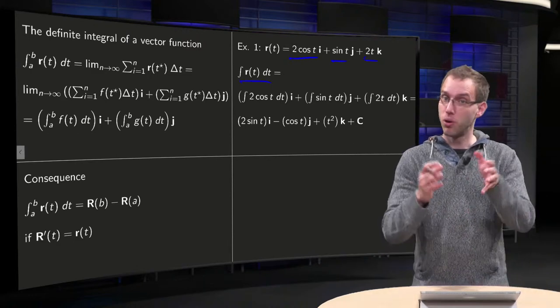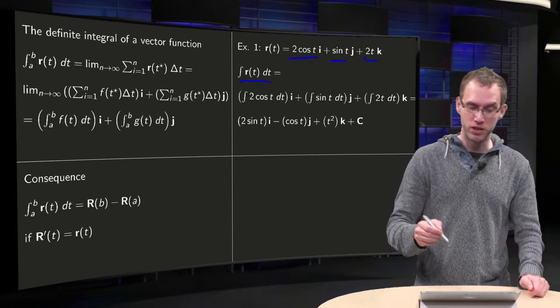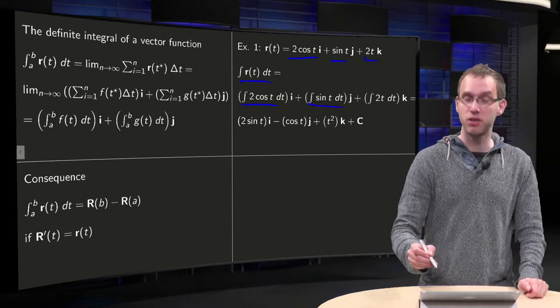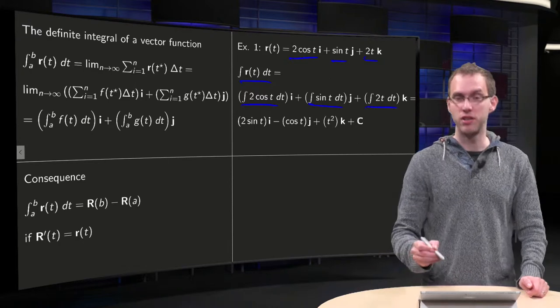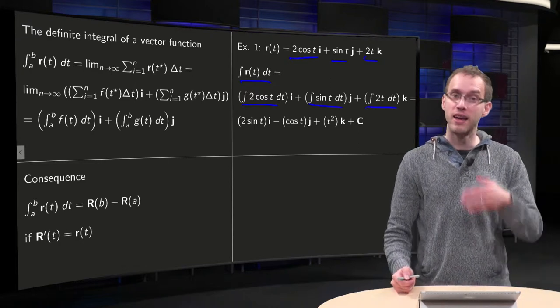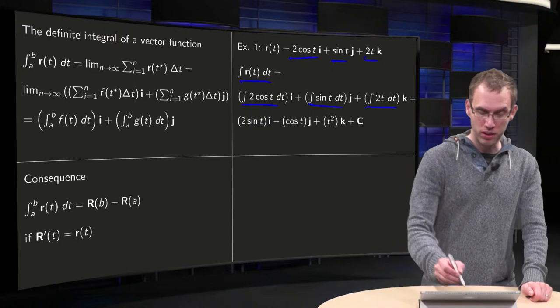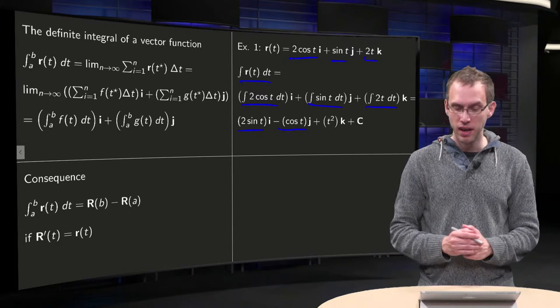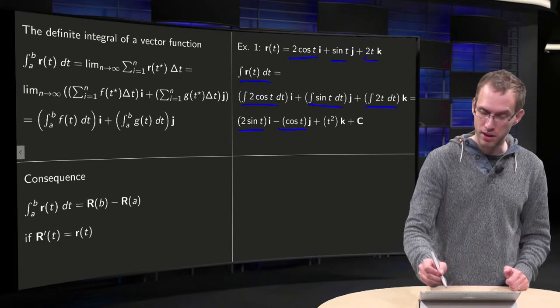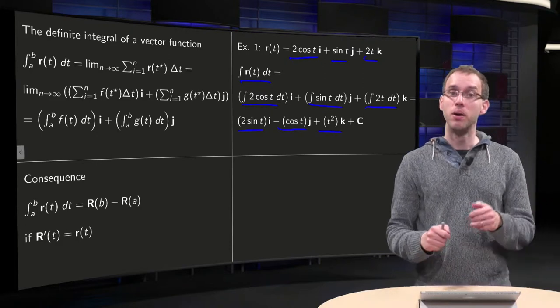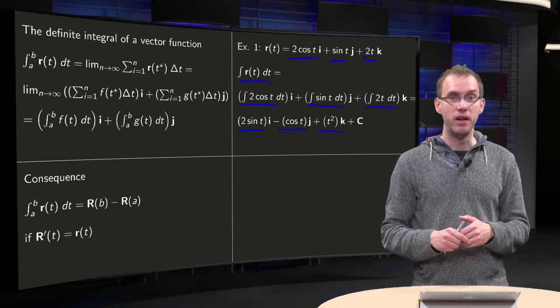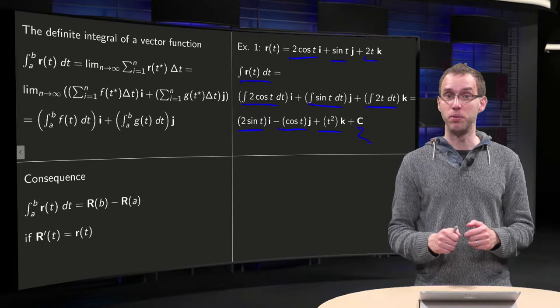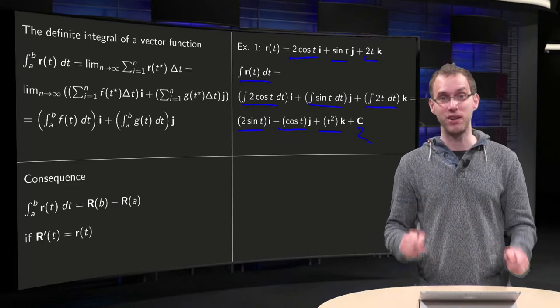For the indefinite integral, you can integrate all components separately. So integrate first component times i, plus integrate second component times j, plus integrate third component times k. Antiderivative of 2 cosine equals 2 sine, antiderivative of sine equals minus cosine, and antiderivative of 2t equals t squared. Now we have an indefinite integral, so we can add some integration constant, which will be some arbitrary vector in R³.